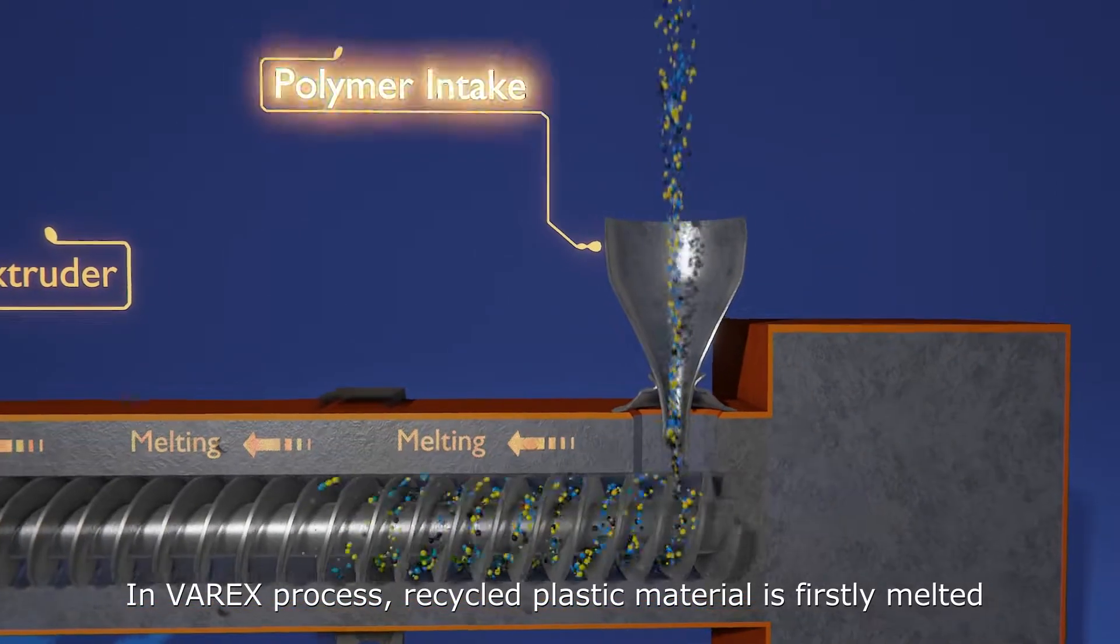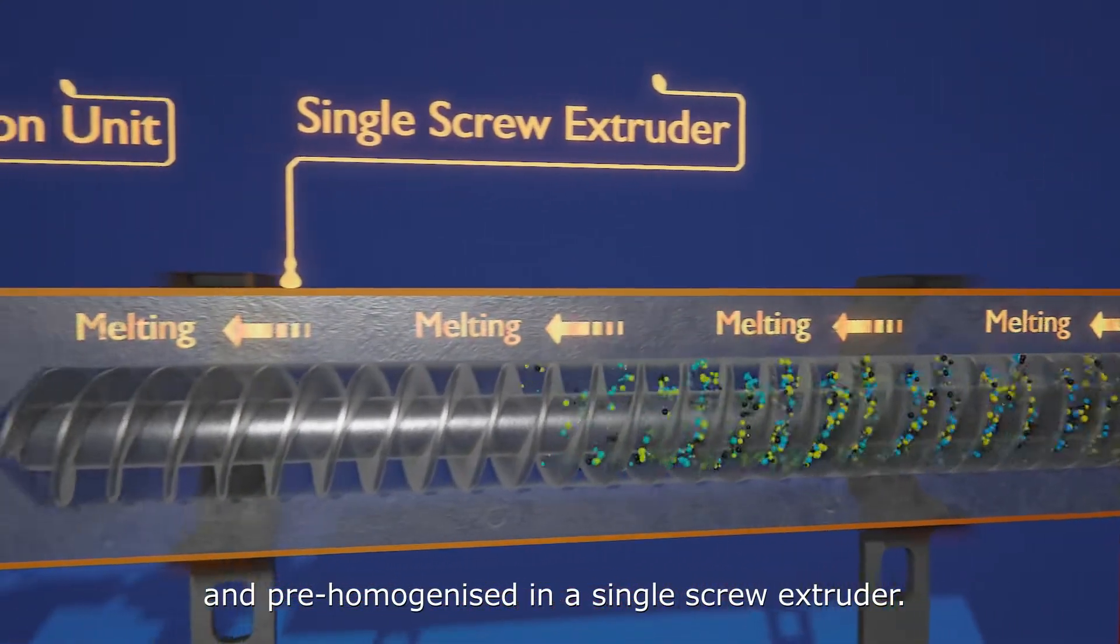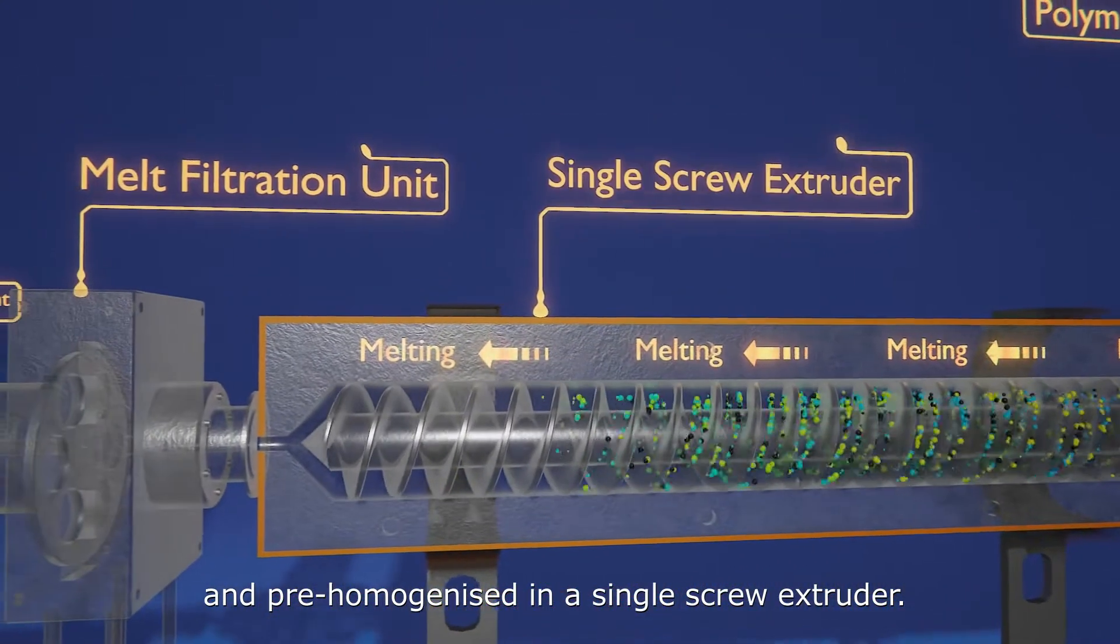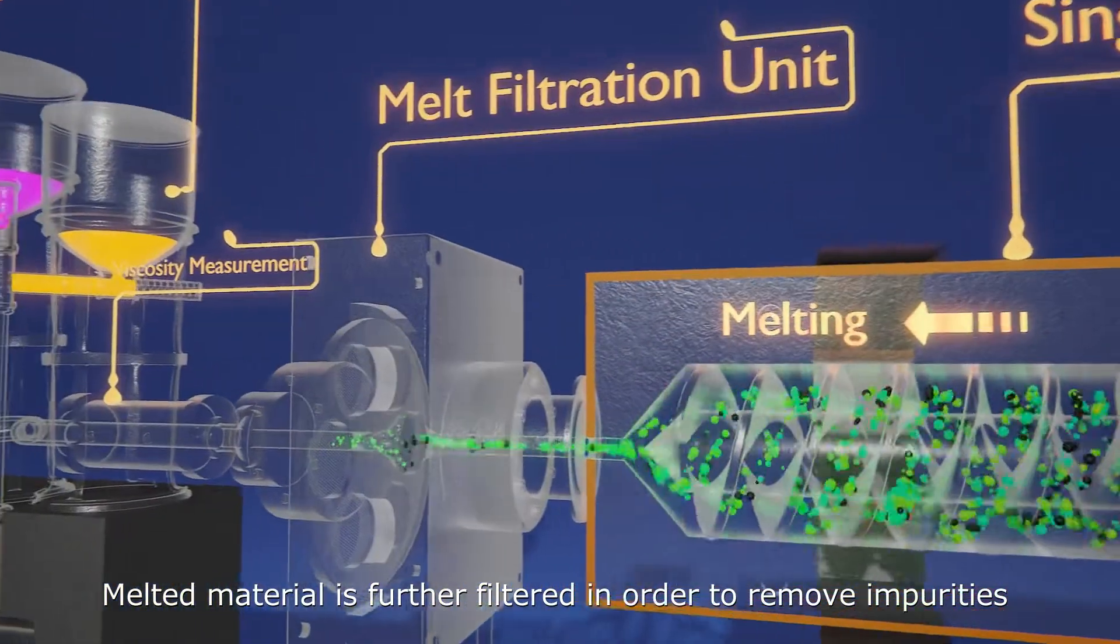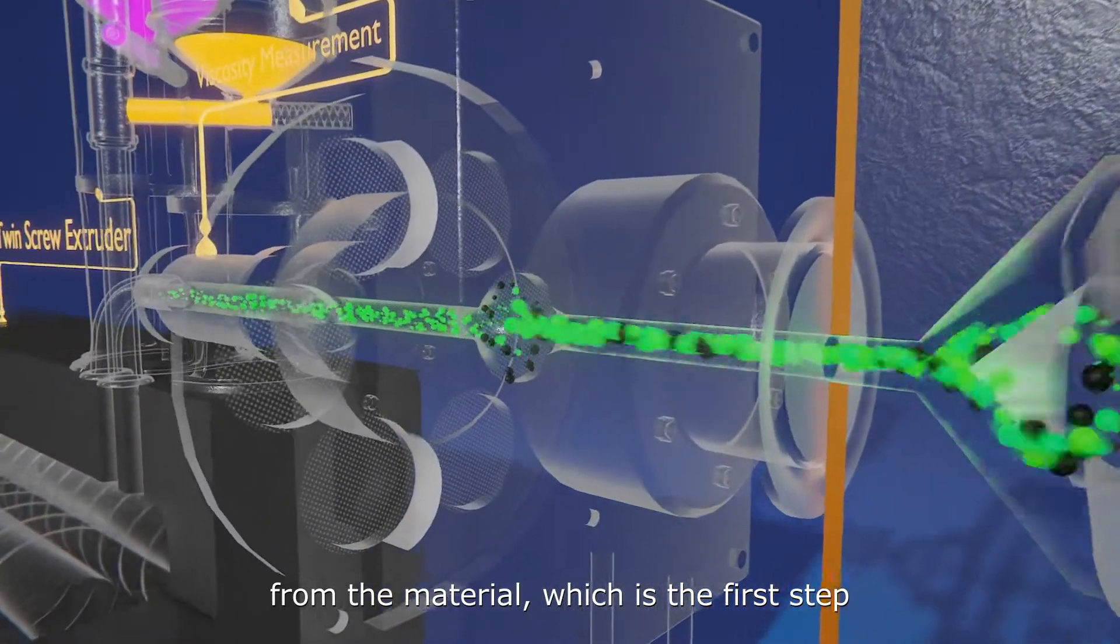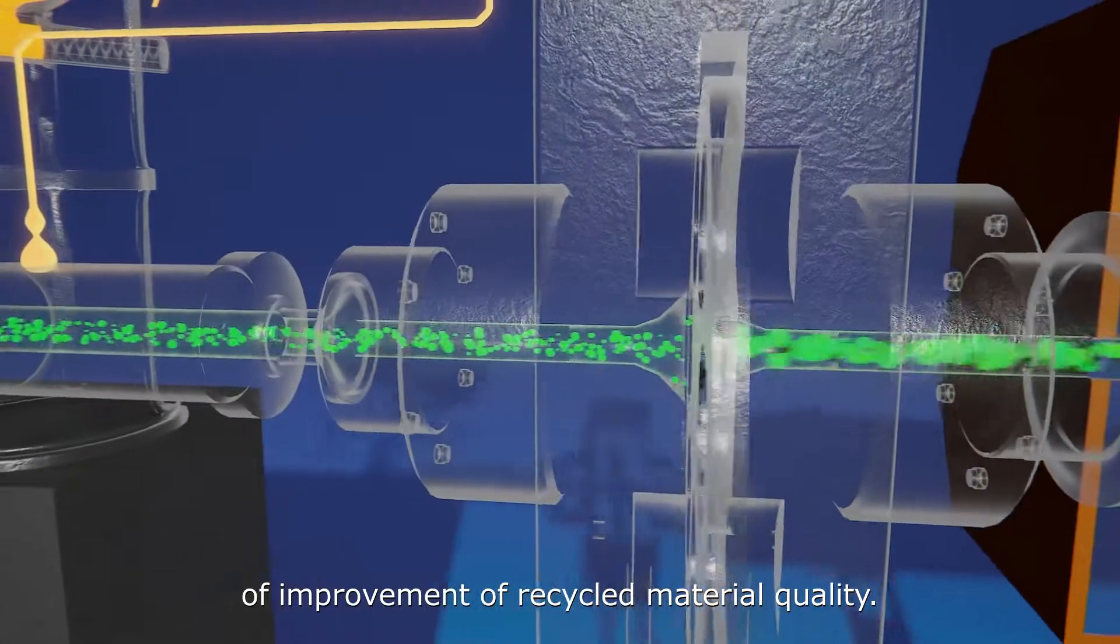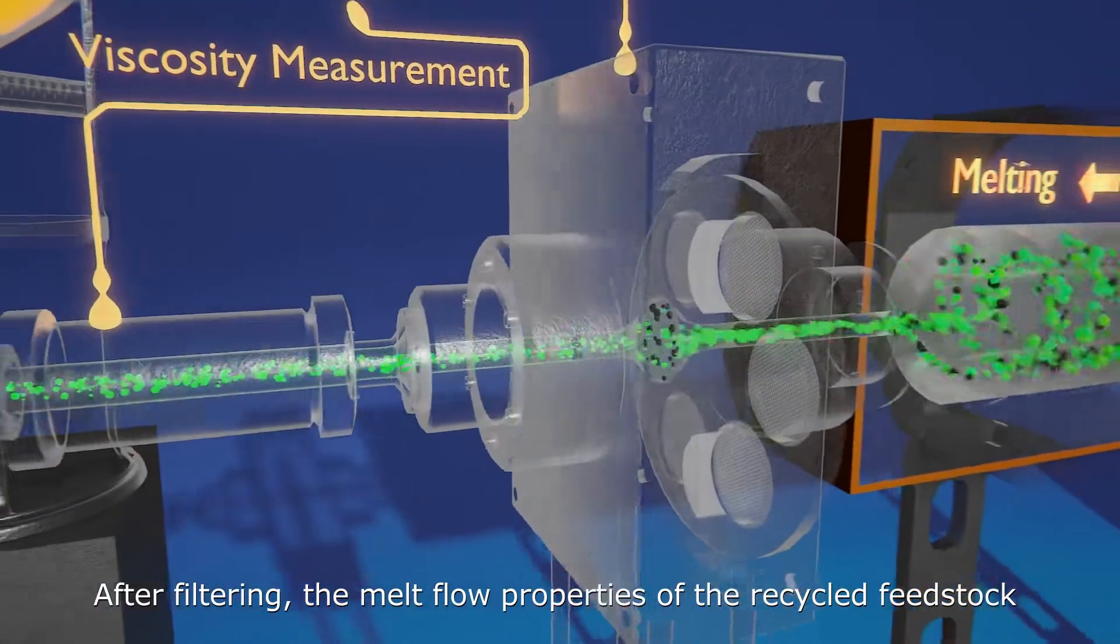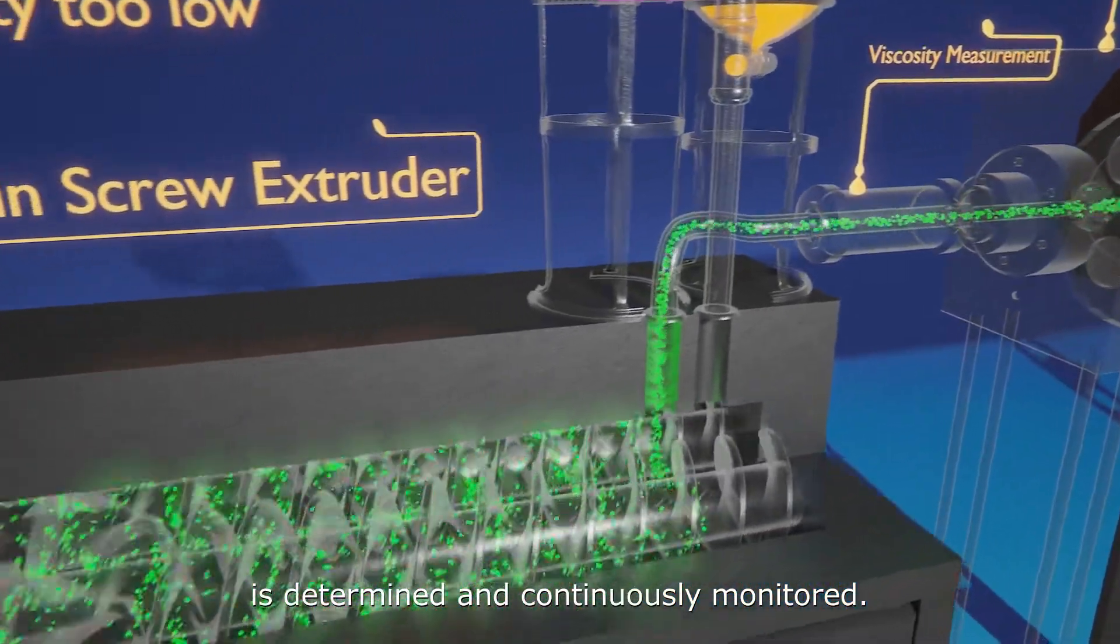In the Varex process, recycled plastic material is firstly melted and pre-homogenized in a single screw extruder. Melted material is further filtered to remove impurities, which is the first step of improvement in recycled material quality. After filtering, the melt flow properties of the recycled feedstock are determined and continuously monitored.